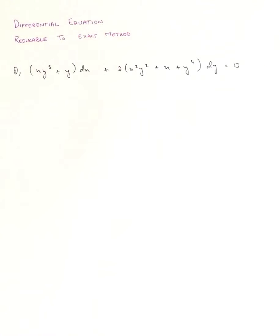Now we are going to see how to use the reducible-to-exact method to solve a differential equation. Our given differential equation is: x·y³ + y dx + 2(x²y² + x + y⁴) dy = 0.